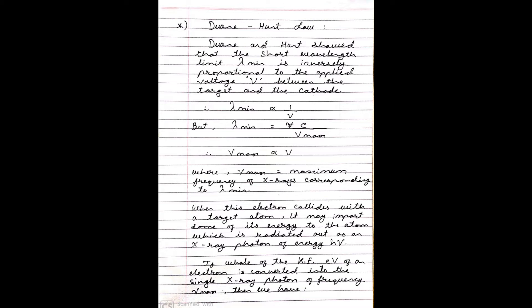When the electron reaches the target, this potential energy of the cathode is converted into kinetic energy at the target and the electron attains maximum speed. When this electron collides with the target atom, it may impart some of its energy to the atom which is radiated out as an x-ray photon of energy h nu.